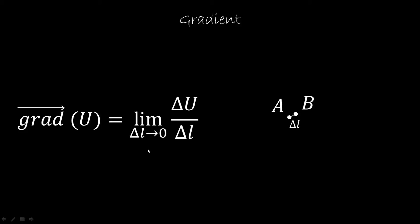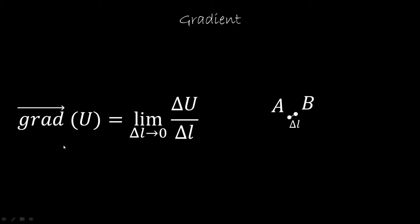So let's calculate the x component of the gradient to see how it looks like. So we have our point B and our point A. We take the value of B, which is going to be U of x plus dx. We take the value at A, which is going to be minus U of x, and we divide it by dx. And we take the limit as dx goes to zero. Now, of course, this looks like the definition of the partial derivative of U with respect to x.